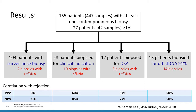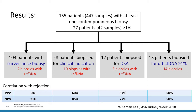To summarize: of 124 biopsies, seven with negative cell-free DNA were diagnosed with rejection, giving a negative predictive value of about 95% for low donor-derived cell-free DNA. Of those 29 biopsies with elevated donor-derived cell-free DNA, 14 were consistent with rejection, 13 showed no pathologic abnormality, one showed glomerulitis only, and one showed findings of glomerular injury, diabetic nephropathy, and secondary FSGS.